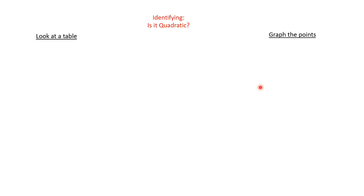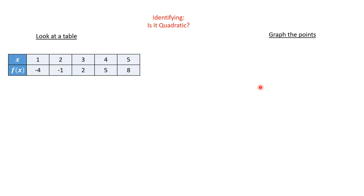Looking at a table is by far more accurate if your points follow a certain pattern — specifically, do the x-values go up by the same amount each time? In this case, our x's are all going up by one each time, so this is a table we can use. If the x-values weren't evenly spaced, we would have to graph the points instead.